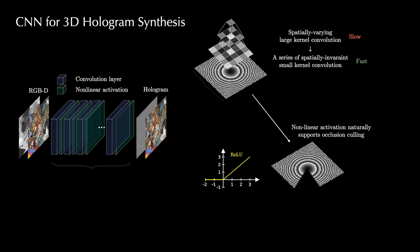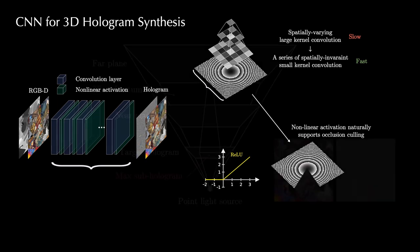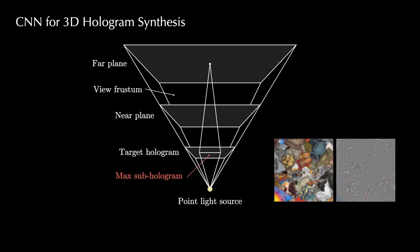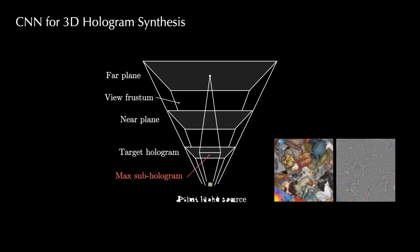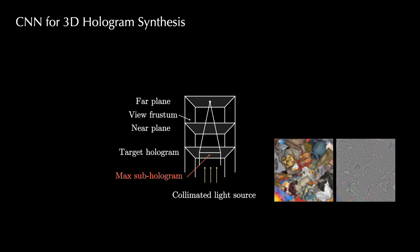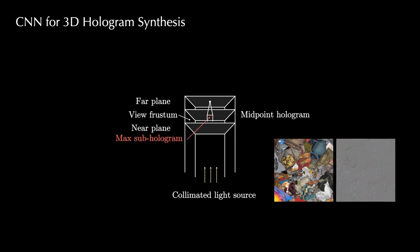Since the number of required convolution layers is proportional to the extent of the sub-hologram, we further reduce the computational cost by mapping any projection geometry to a collimated counterpart and propagating the target hologram to the center of the 3D volume to minimize the extent of the maximum sub-hologram. After CNN prediction, we can back-propagate the predicted hologram to any target location for the desired display configurations.